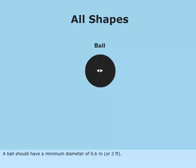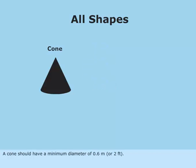A ball should have a minimum diameter of 0.6 meters or 2 feet. A cone should have a minimum diameter of 0.6 meters or 2 feet.